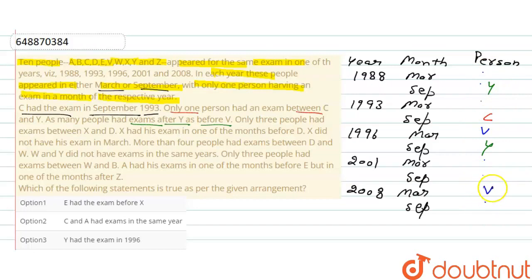Only three people had exam between X and D. X and D के between तीन person का gap होगा। X का exam यहां पे D से पहले होगा and March में नहीं होगा X का exam। तो यहां पे देखें, अगर यहां पे March है तो यहां पे X का exam नहीं हो सकता, यहां पे भी नहीं हो सकता है क्योंकि March का month आ गया। And यहां पे देखें तो यहां पे तो और ridhi V है तो यहां भी नहीं हो सकता।